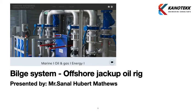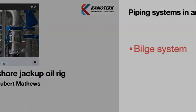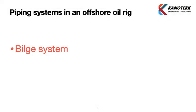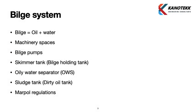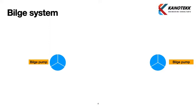We will be discussing the bilge system in an offshore jackup oil rig. We will see the purpose of a bilge system and what functionality it serves. Bilge refers to an oil and water mixture generally present in machinery spaces. The equipment we will cover includes bilge pumps, bilge holding tank, oily water separator, and dirty oil tank.